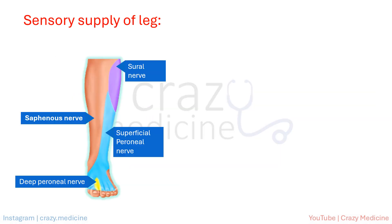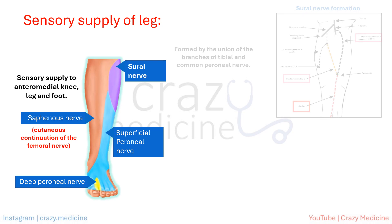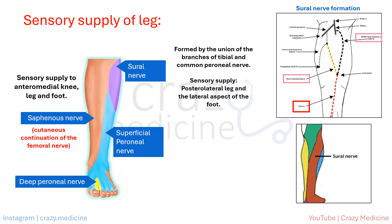Talking about the saphenous nerve, which is the cutaneous continuation of the femoral nerve — it has sensory supply to the anteromedial knee, leg, and foot as shown in the figure. The sural nerve is formed by the union of branches of the tibial and common peroneal nerve, and it has sensory supply to the posterolateral leg and lateral aspect of the foot.